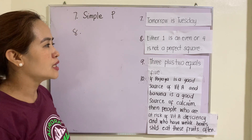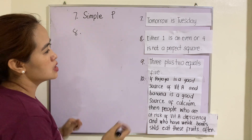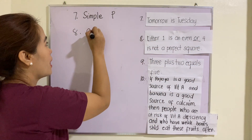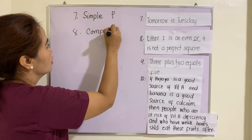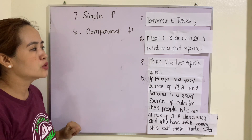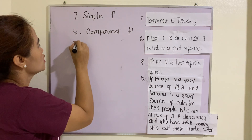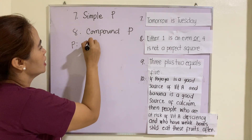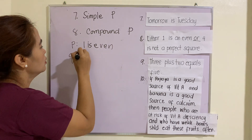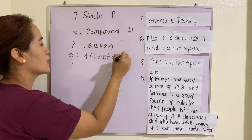Number eight: 'Either one is an even or four is not a perfect square.' In this case we have 'either...or' as connectors, therefore this one is a compound proposition. The two propositional variables are: p - 'One is even', and q - 'Four is not a perfect square.'